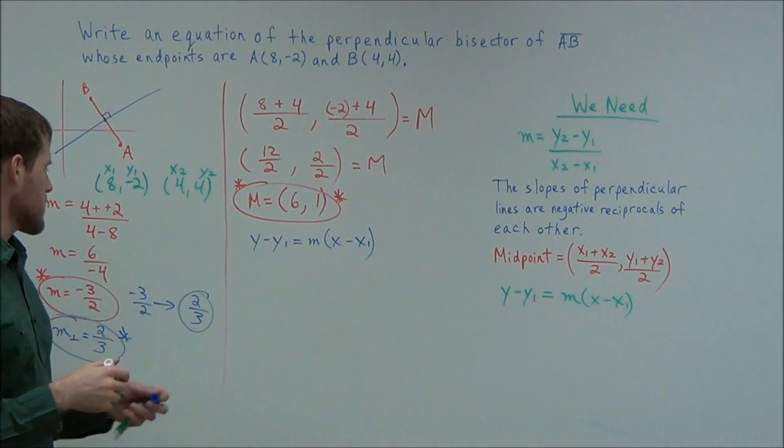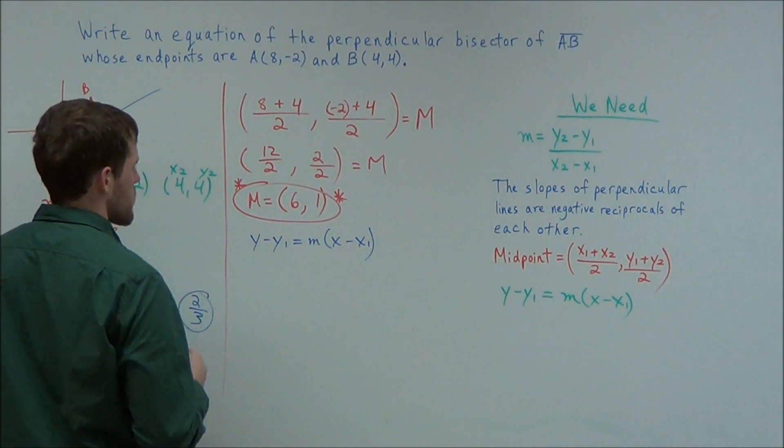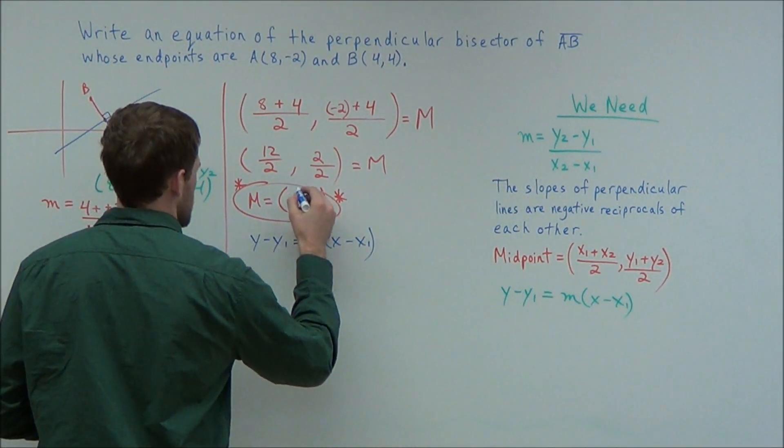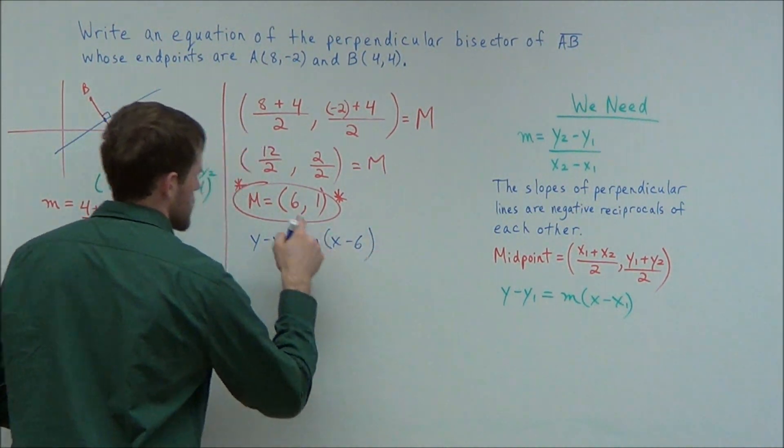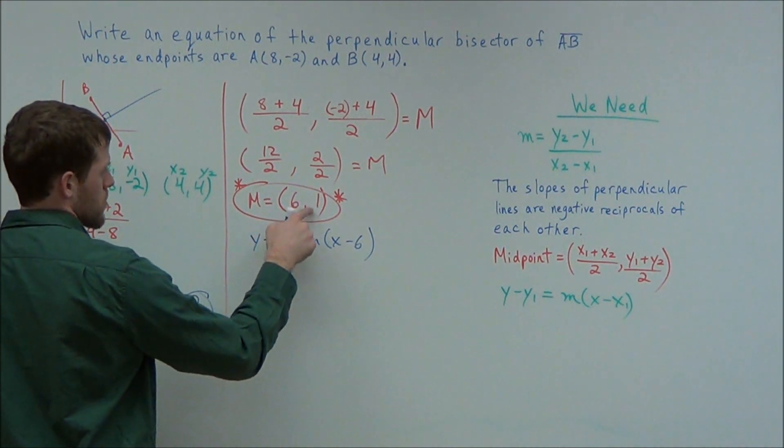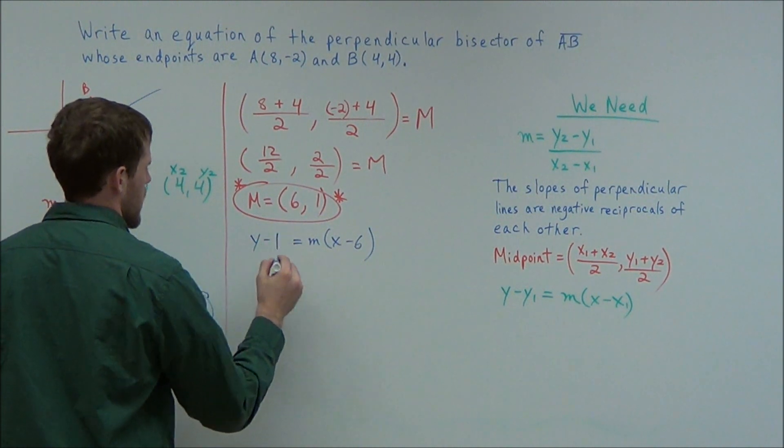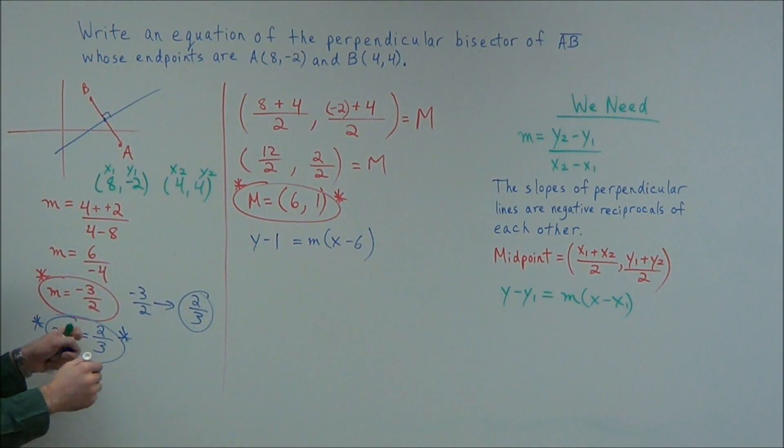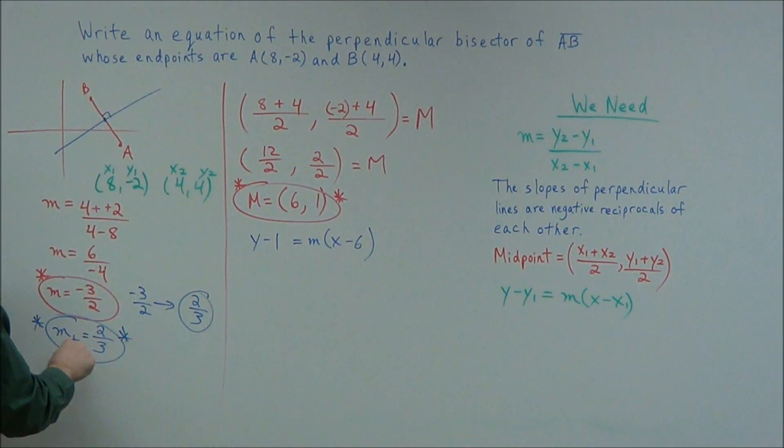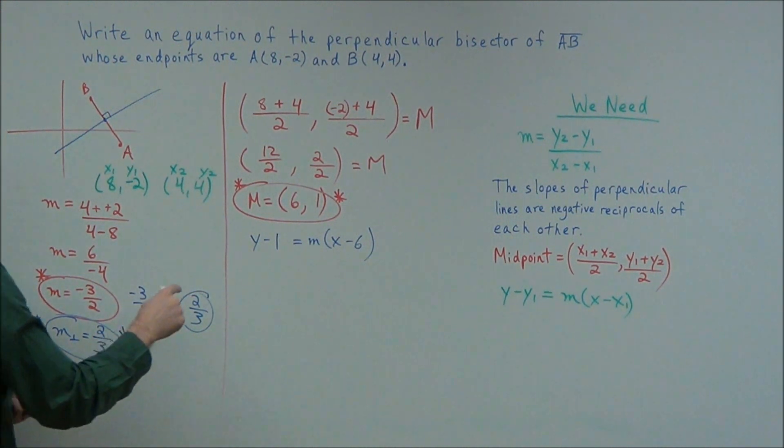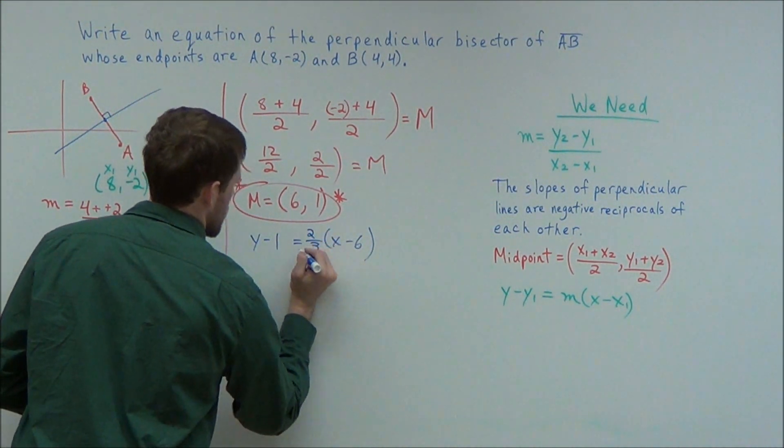So we have y minus y1 equals M times x minus x1. So what we could do is we replace, this is our x1, y1, so we could replace x1 with 6, since this is our x coordinate, and we replace y1 with positive 1. And now we could replace M, our slope, with the slope of the line we're trying to build an equation for. Remember, this was our perpendicular line, and the slope for our perpendicular line is 2 thirds. So we replace M with 2 thirds.